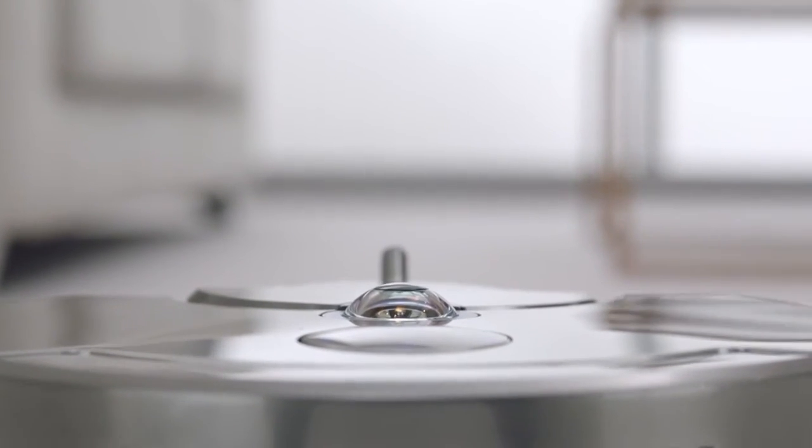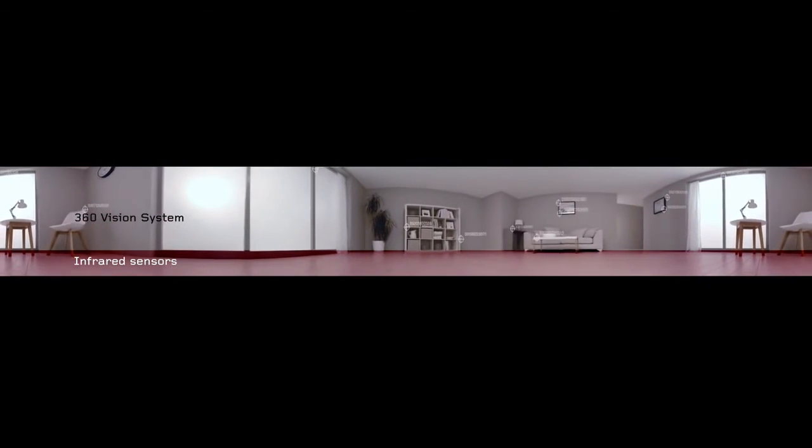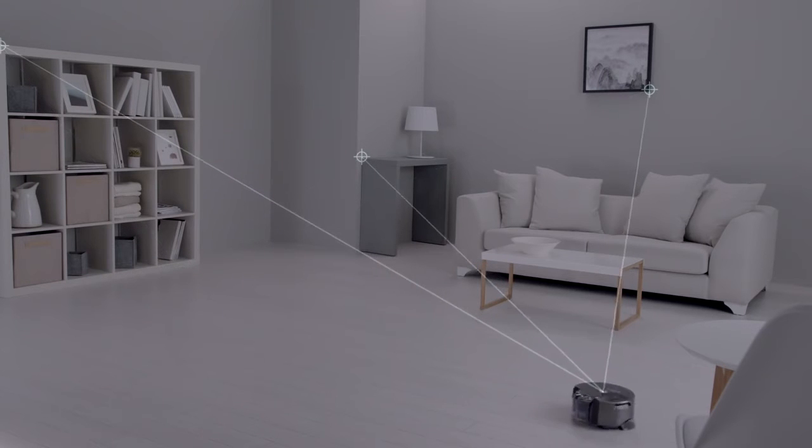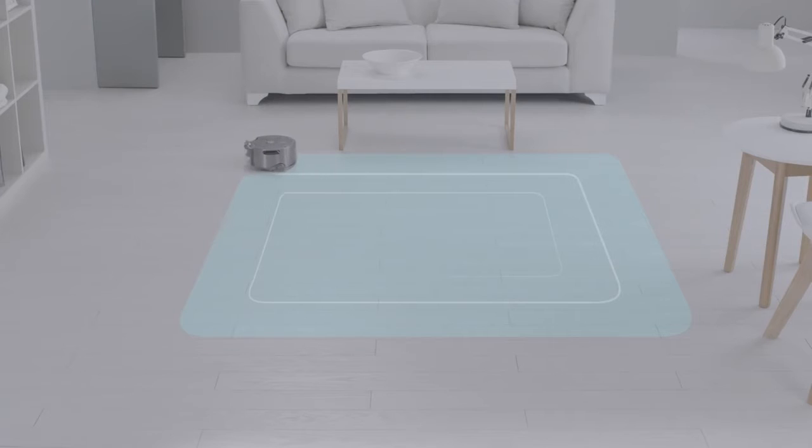A unique 360-degree vision system sees all the way around itself at once, selecting reference points to track and triangulate its position so it knows where it is, where it's been, and where it is yet to clean, systematically cleaning your home in 3-meter grids.